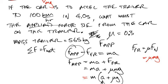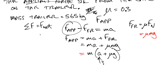If the car is to accelerate the trailer to 100 kilometers per hour, it doesn't really say it's from zero, but we have to assume that in four seconds. So I've got a few equations that I can choose from for acceleration. But the one that I think is going to be the easiest is this one.